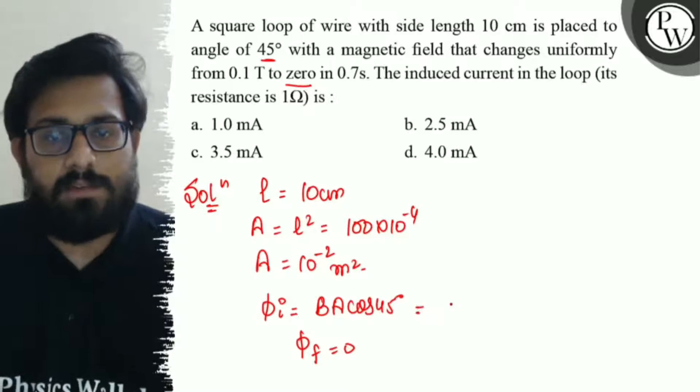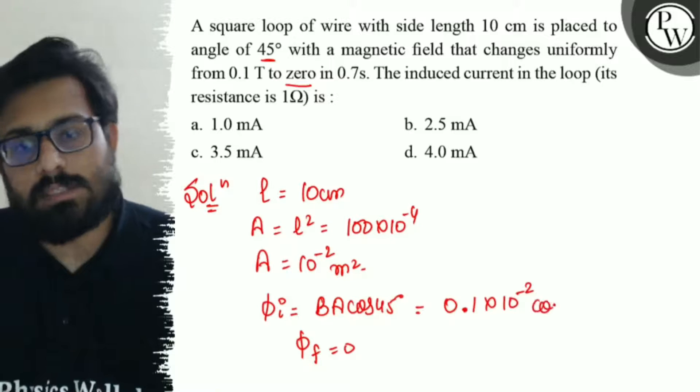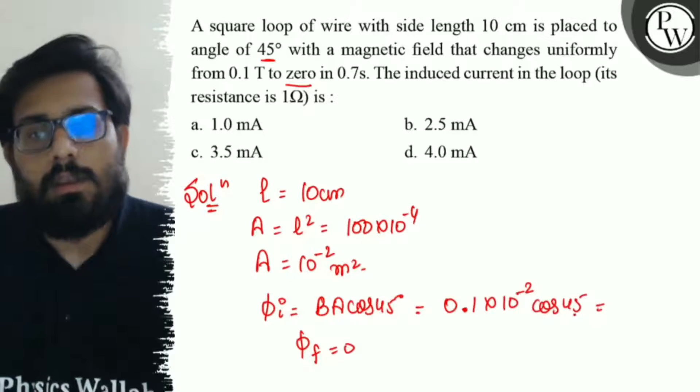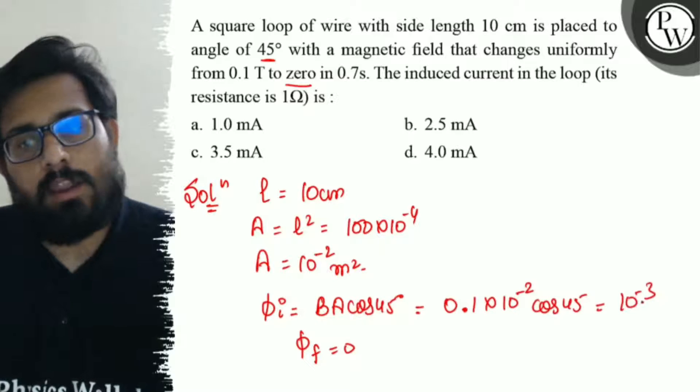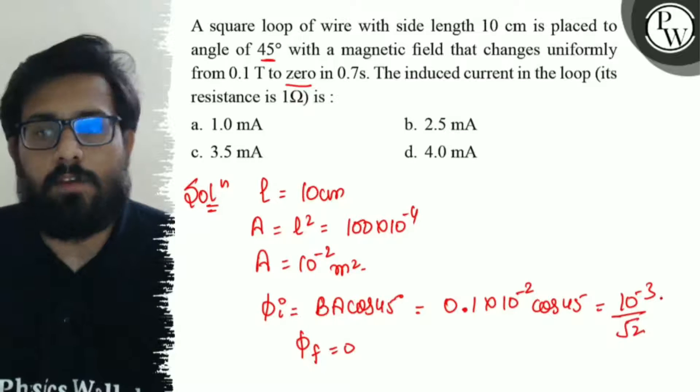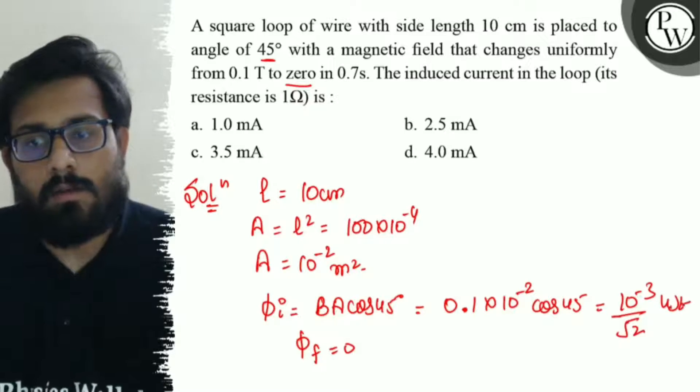So initial flux is the value of 0.1. So this can be written as 10 to the minus 3 by root 2. This is the value of initial flux.